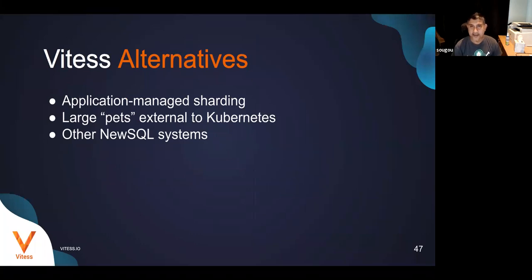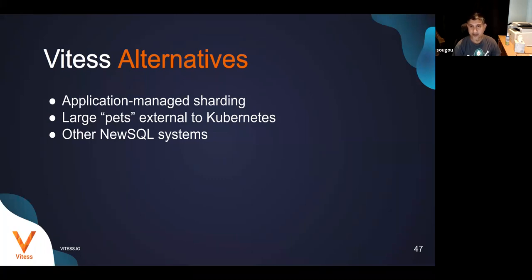Alternatives to Vitess include application-managed sharding, which is now generally not recommended unless you've already done it, vertical scaling by buying increasingly expensive hardware, and newer NewSQL systems like CockroachDB which is also gaining adoption.